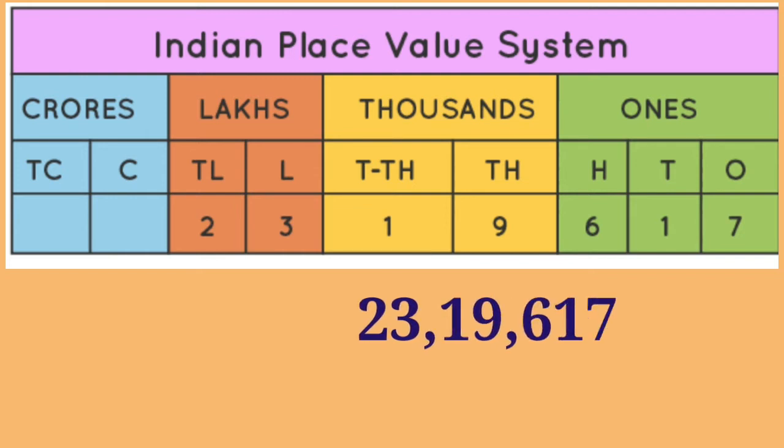First of all seven will come at ones place, one at tens place, six hundreds place, nine thousands place, one ten thousands place, three lakhs place and two ten lakhs place.